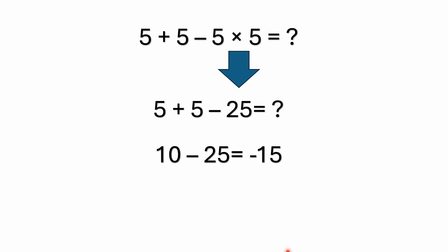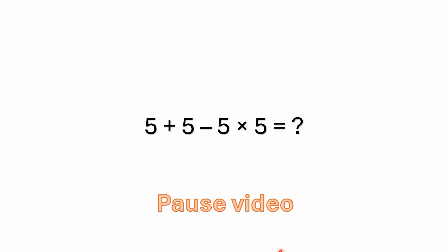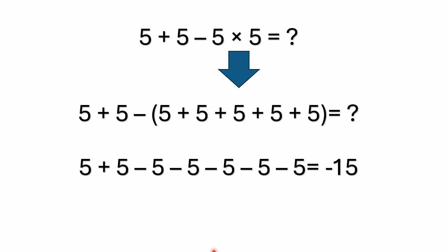So the first part of the problem you would solve is the multiplication, which is 5 times 5. Five times five is 25, of course. So you've got 5 plus 5 minus 25, which is 10 minus 25, equals negative 15. Negative 15 would be your correct answer.